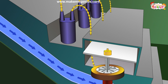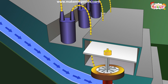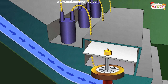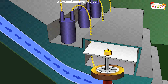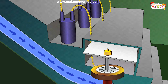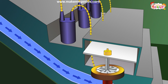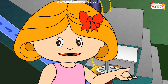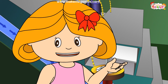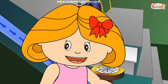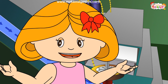Then it is sent to our homes through transmission lines. It is so clear now: water from the dam moves the turbine, the turbine drives the generator, and the generator produces the electricity. That is how water helps in producing electricity.